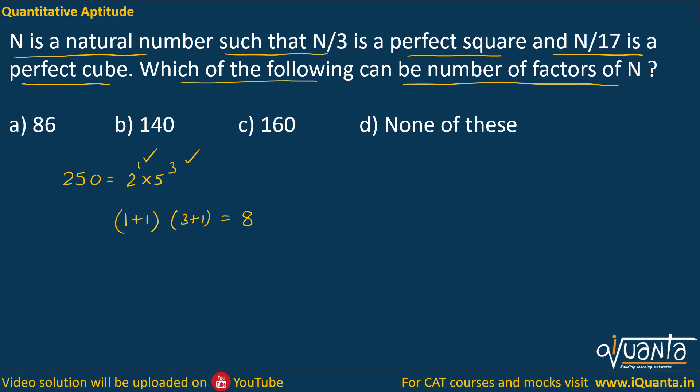A similar concept has to be used here. We can see that n is being divided by 3 and 17, so definitely n will comprise 3 to the power a and 17 to the power b. Let the powers be a and b.